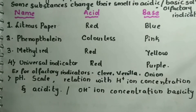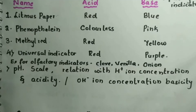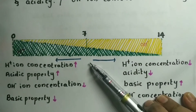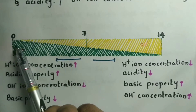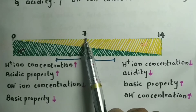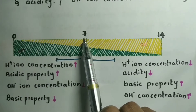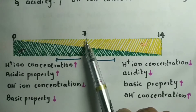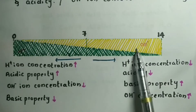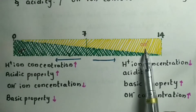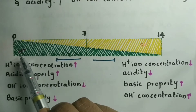Let us study the relation between H+ ion concentration, the change in pH, and the acidity and basicity of solutions. The pH scale varies from 0 to 14, with 7 being neutral. Solutions with pH between 0 and 7 are acidic, and solutions with pH between 7 and 14 are basic. Yellow color indicates the concentration of OH- ions and green color indicates H+ ion concentration.